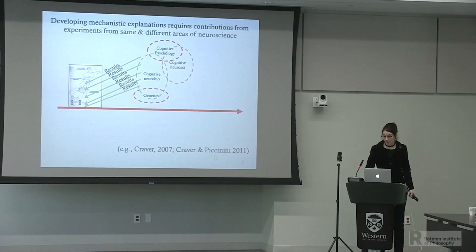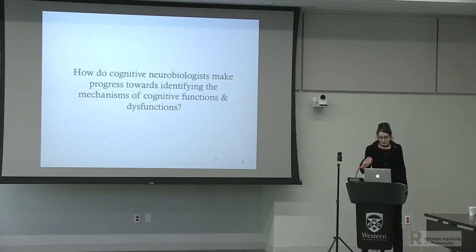The basic idea is that neuroscientists strive for these multilevel mechanistic explanations, identifying at different levels of organization what is productive of the phenomena of interest. Developing mechanistic explanations requires contributions from experiments from the same and different areas of neuroscience, involving collaboration and data integration.